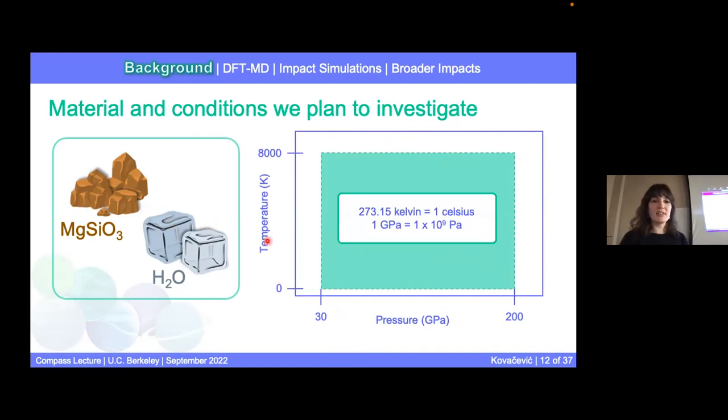So really quickly, we have pressure on the x-axis and temperature on the y. And I want to just put it into units that maybe we're more familiar with. When we think about temperature, we, planetary scientists, usually use Kelvin. Around 273 Kelvin is equal to 1 Celsius. So the temperatures I'm planning to investigate go a little above 7500 Celsius. And then this term GPA is gigapascal. So one times 10 to the ninth. So that means nine zeros behind it. So one times 10 to the ninth Pascal is equal to one gigapascal. So that's a lot of pressure.